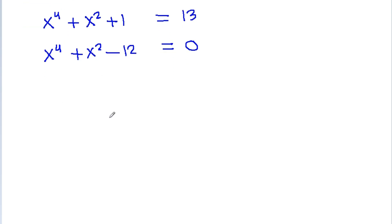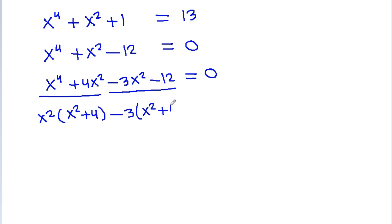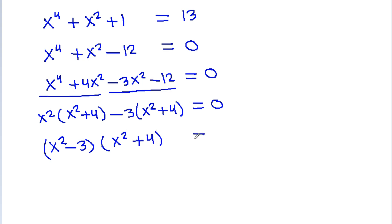We factor x⁴ + x² - 12 = 0 as (x² - 3)(x² + 4) = 0.